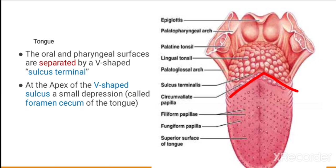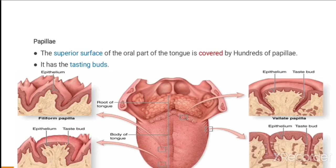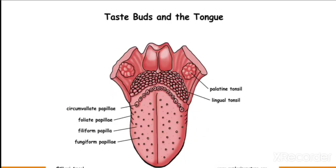At the apex of the V, there is a small depression known as the foramen cecum. On the oral surface we have papillae. The superior surface of the oral part of the tongue is covered by hundreds of papillae, and these papillae have taste buds for receiving taste sensations. Taste buds on the tongue can be seen on the lateral walls of the papillae.